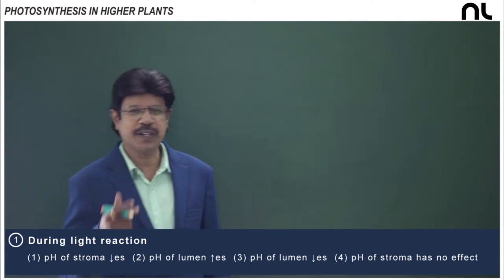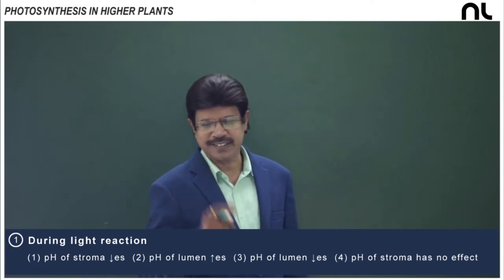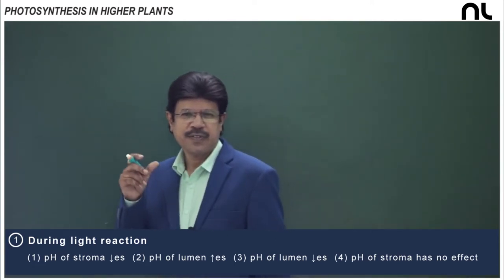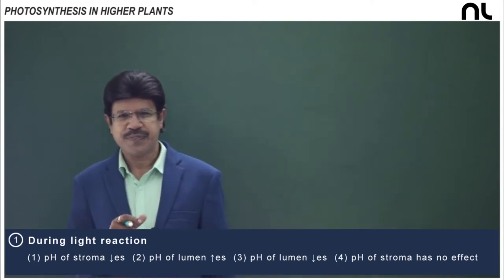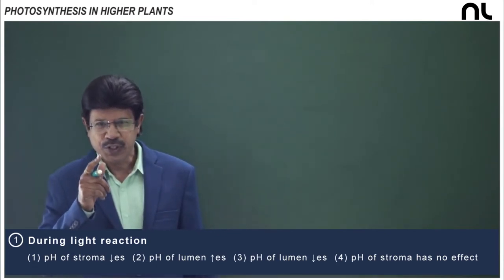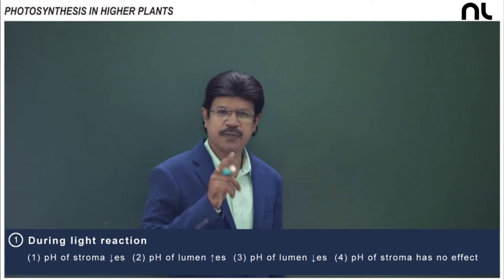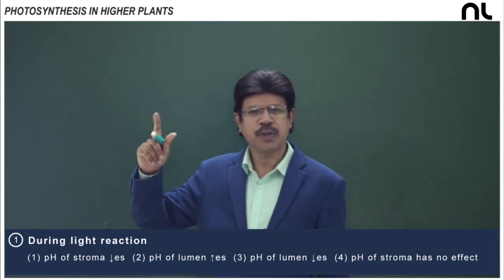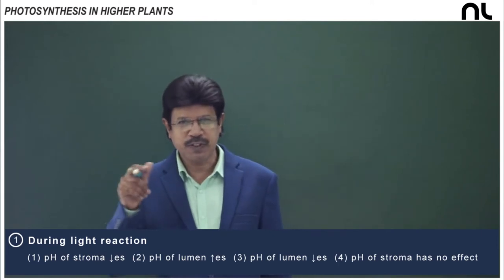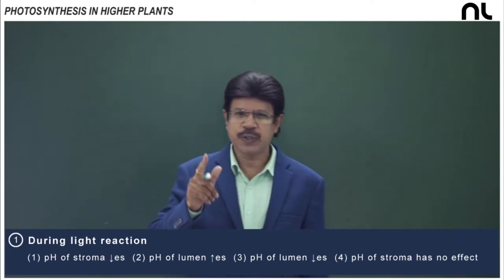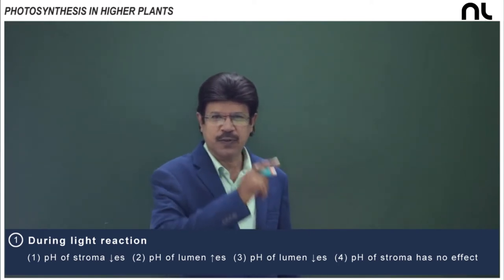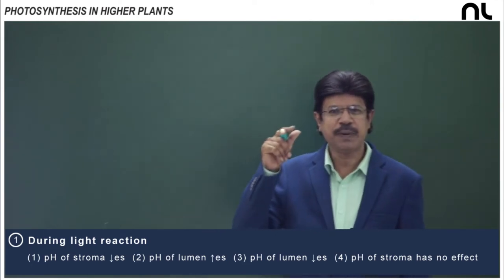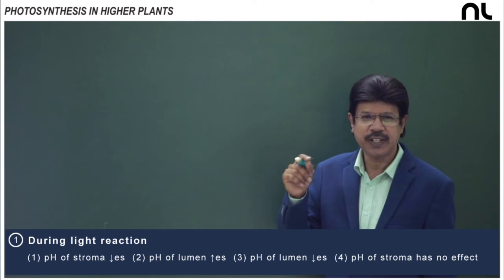Excitation of the chlorophyll is the first step in photosynthesis. The primary acceptor of electrons in photosystem II (PS2) is pheophytin, which transfers electrons not to the cytochrome complex but to plastoquinone. This plastoquinone accepts electrons from pheophytin and protons from the stroma, and gets reduced to plastoquinol (PQH2).